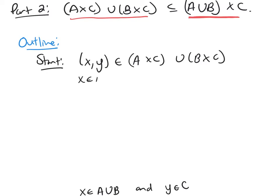I know (x, y) would have to be in A cross C, or (x, y) would have to be in B cross C. And because I have an 'or' here, we're going to proceed with cases.